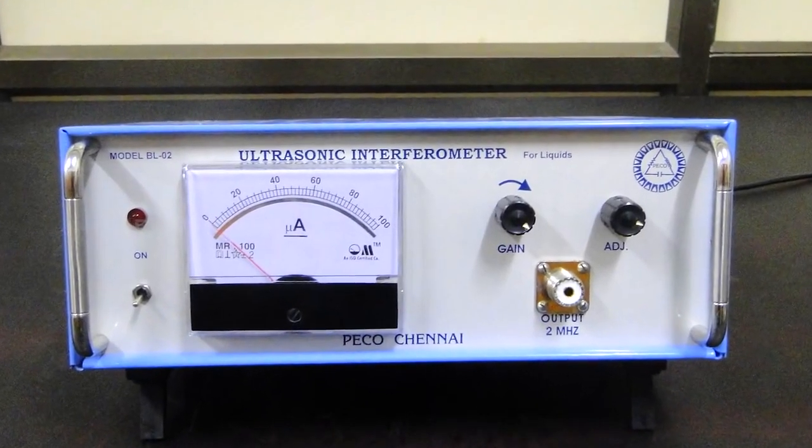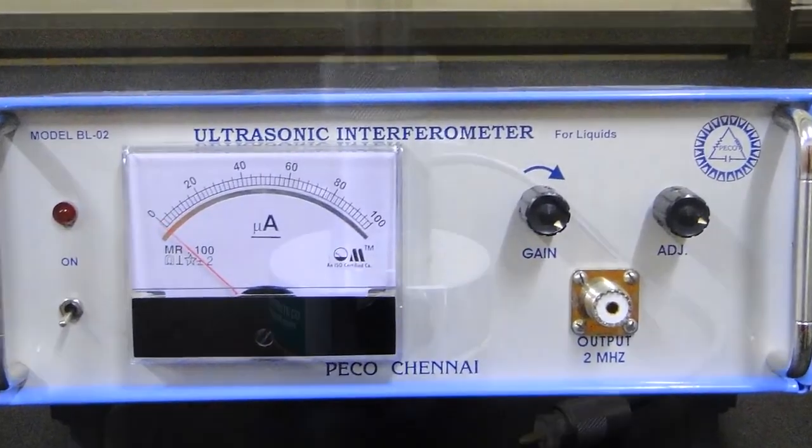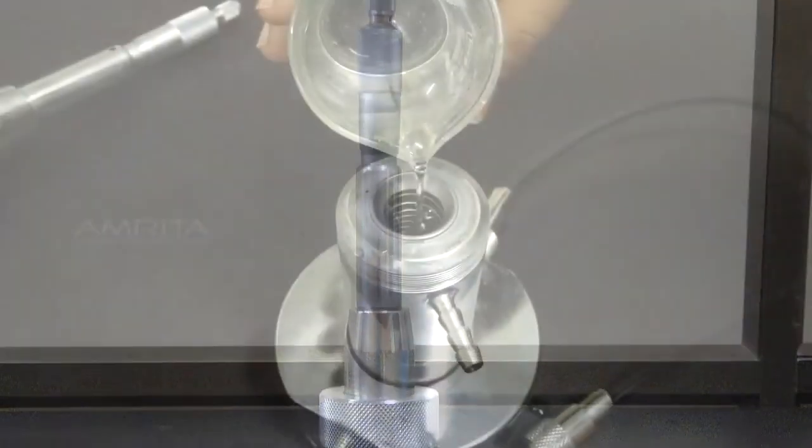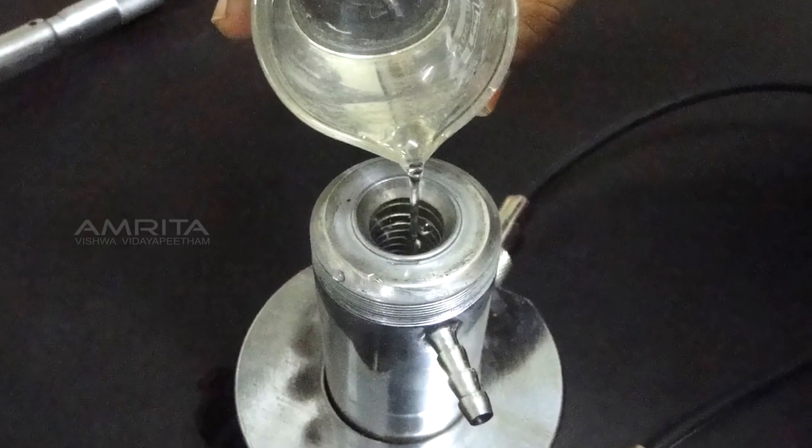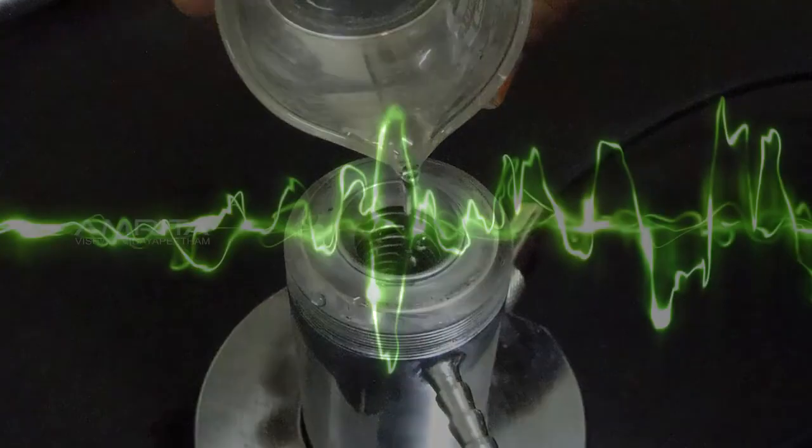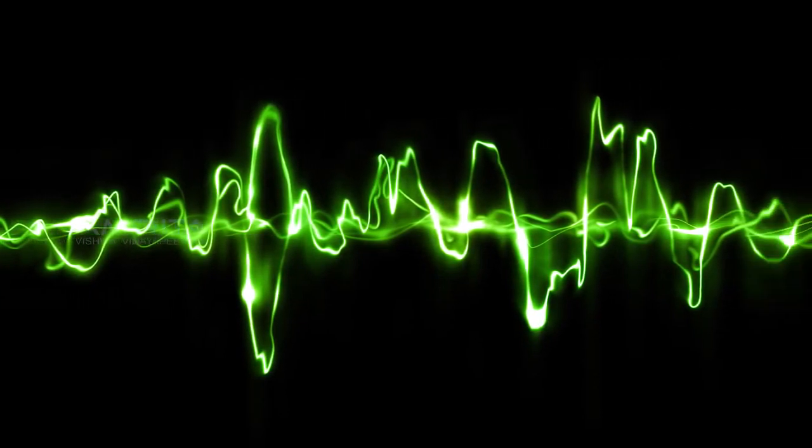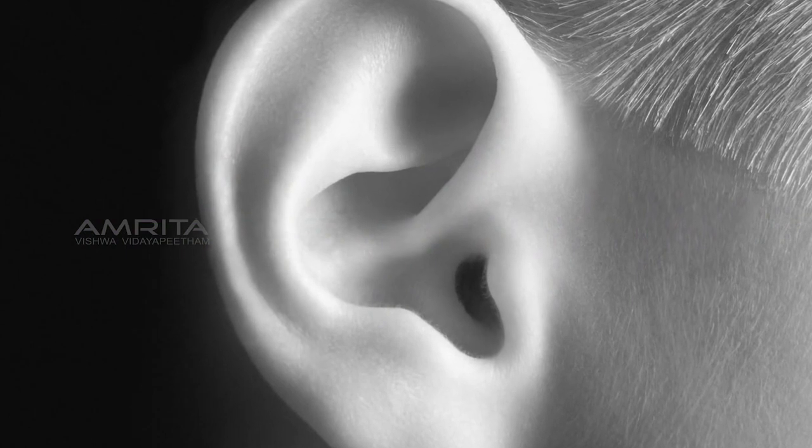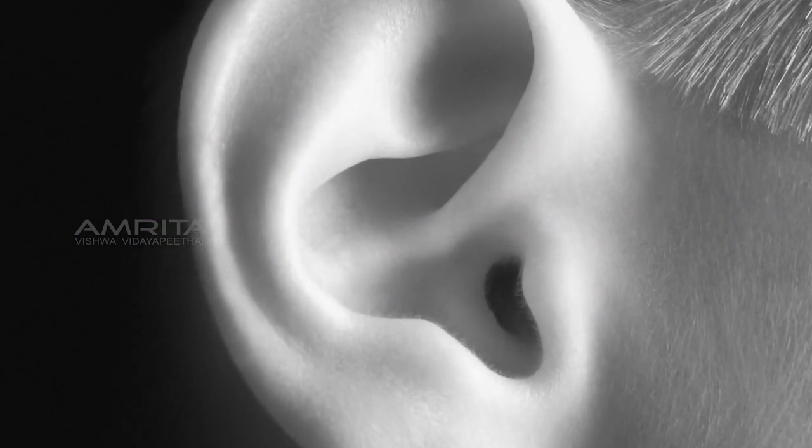Ultrasonic interferometer is a simple device that yields accurate and consistent data from which one can determine the velocity of ultrasonic sound in a liquid medium. Ultrasonic sound refers to sound pressure with a frequency greater than the human audible range, that is 20 Hz to 20 kHz. When an ultrasonic wave propagates through a medium, the molecules in that medium vibrate over very short distances in a direction parallel to the longitudinal wave.